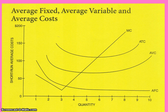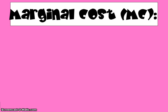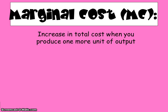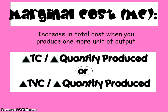This graph also shows marginal cost, which we're going to discuss next. One thing to notice is that marginal cost intersects average total cost and average variable cost at their lowest points. Marginal cost is the increase in total cost when you produce an additional unit of output — you're just looking for a rate of change. Marginal cost is the derivative of total cost or total variable cost. You can calculate it by dividing the change in total cost by the change in quantity, or by dividing the change in total variable cost by the change in quantity produced.